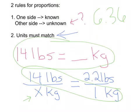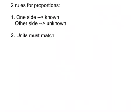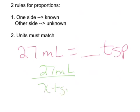Let's do another example. Let's say we have 27 milliliters and I want to know what that is in teaspoons. So 27 milliliters equals a blank amount of teaspoons. Again, this entire question — the 27 milliliters and the X amount of teaspoons — is one part of our unknown, so I'm going to put that together on one side: 27 milliliters over X amount of teaspoons. Therefore, when I set up the known, milliliters needs to go on top and teaspoons needs to go on the bottom, because that's how I have it on the unknown side.